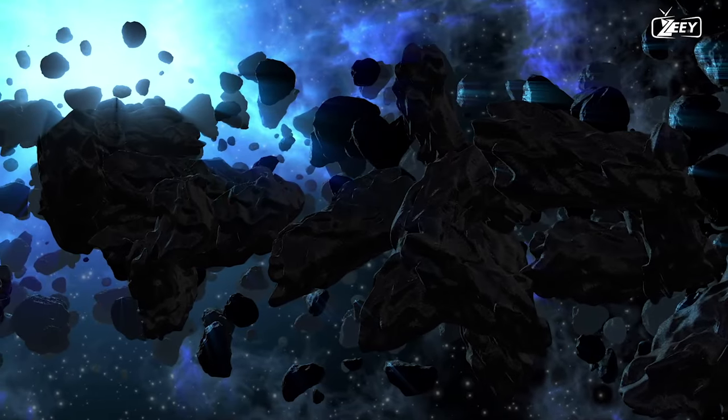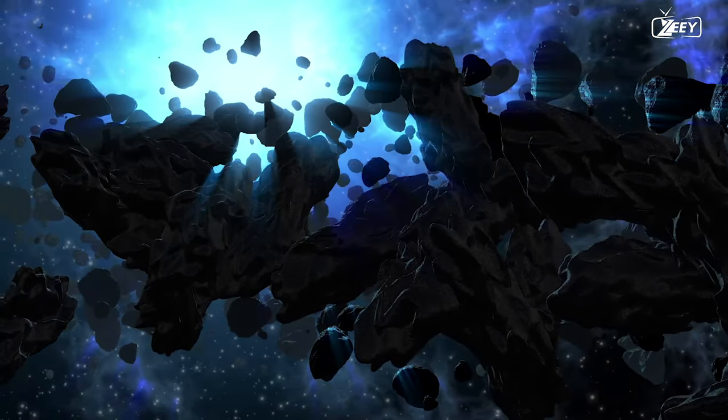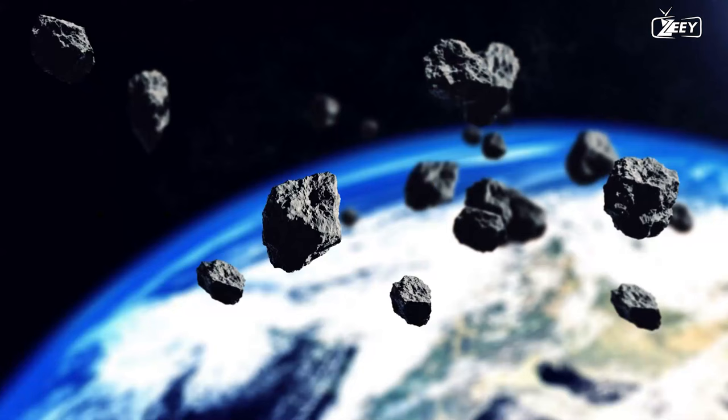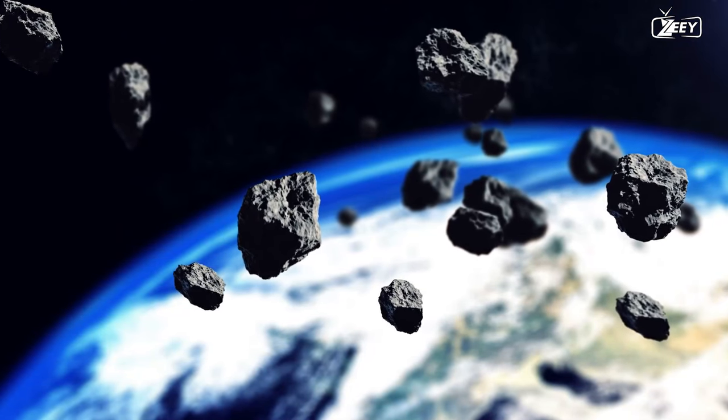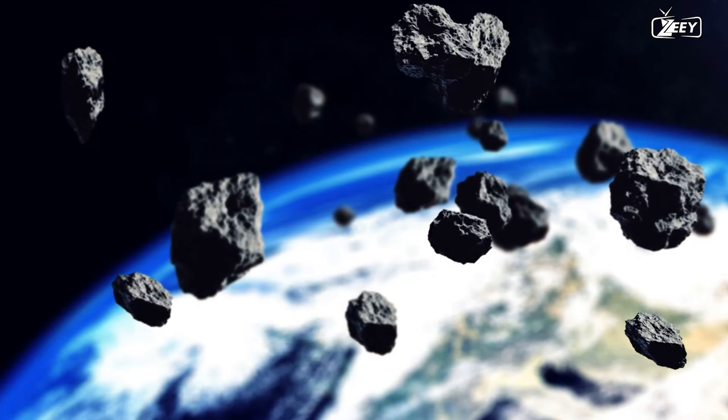Furthermore, many of the asteroids that form the rings of Jupiter, Uranus, and Neptune are dark, making them even more difficult to see. If the Earth had a ring similar to those of the three gas giants, it would likely be difficult to see even from Earth.